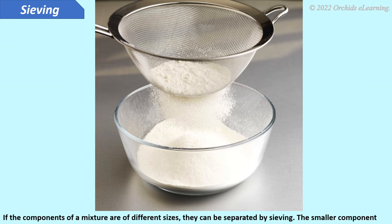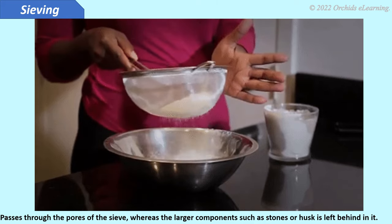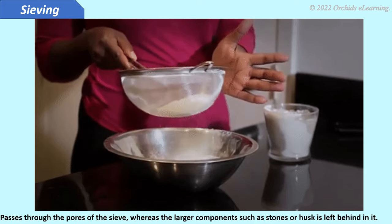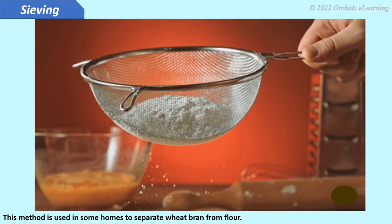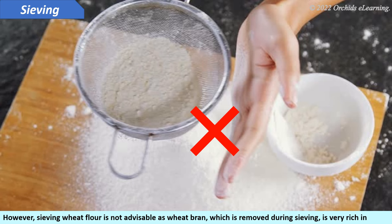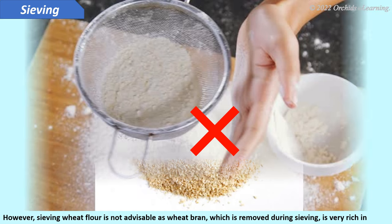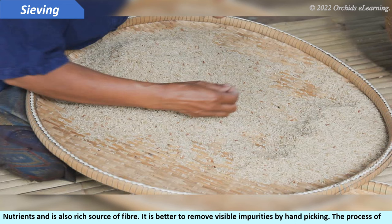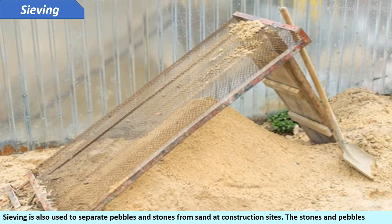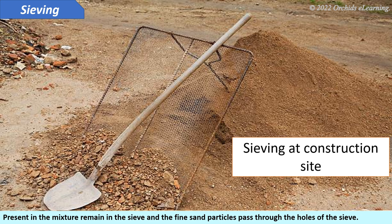Sieving. If the components of a mixture are of different sizes, they can be separated by sieving. The smaller component passes through the pores of the sieve, whereas the larger components such as stones or husk are left behind. This method is used in some homes to separate wheat bran from flour. However, sieving wheat flour is not advisable as wheat bran, which is removed during sieving, is very rich in nutrients and is also a rich source of fiber. It is better to remove visible impurities by handpicking. Sieving is also used to separate pebbles and stones from sand at construction sites — the stones and pebbles remain in the sieve, while the fine sand particles pass through the holes.